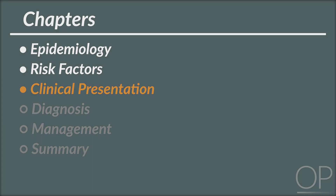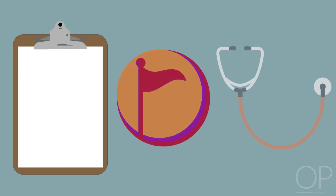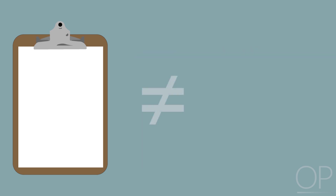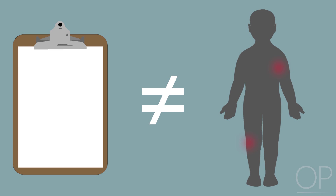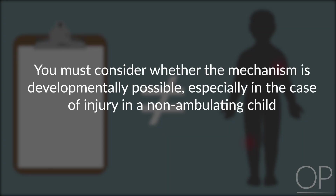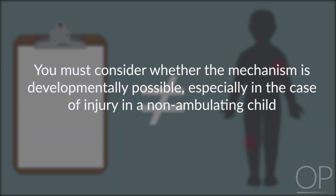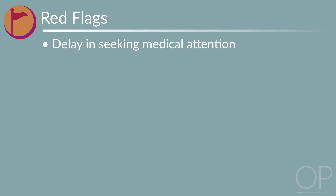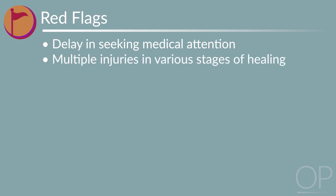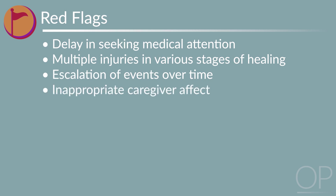Clinical Presentation. There are several red flags from the history and exam that should alert you to the possibility of child abuse. The most important clue is discordance between the history and injury. In addition to evaluating whether the story provided makes sense and remains consistent over time, you must consider whether the mechanism is developmentally possible, especially in the case of injury in a non-ambulating child. Other red flags include delay in seeking medical attention, multiple injuries in various stages of healing, escalation of events over time, inappropriate caregiver affect, and recent triggering event or stressor.